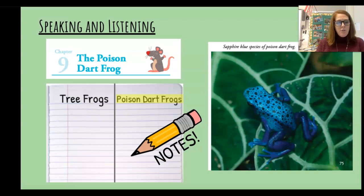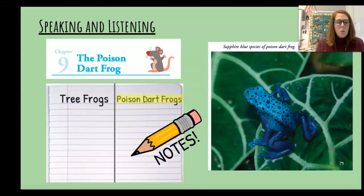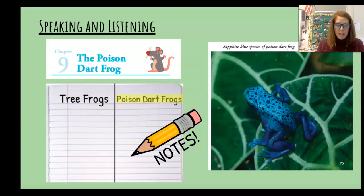A poison dart frog lives in the rainforests of South America. It is a tiny frog — only an inch and a half long. It is cute, but it would be a mistake to pet this frog. Frogs like this one secrete poison, which means the poison seeps out from its skin. Some poison dart frogs secrete a mild poison; others secrete a poison that is strong enough to kill humans.